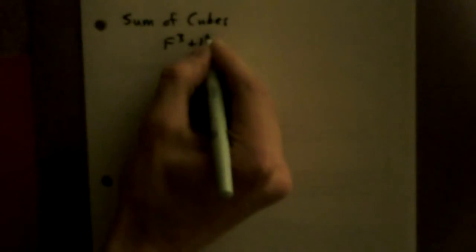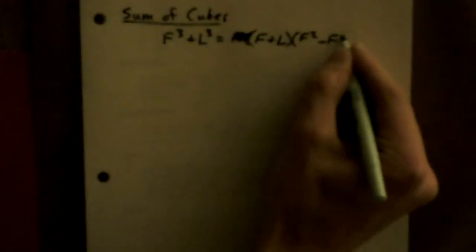A sum of cubes has a special form. When we see something cubed plus something cubed, F³ + L³, it factors into (F + L) times (F² - FL + L²).